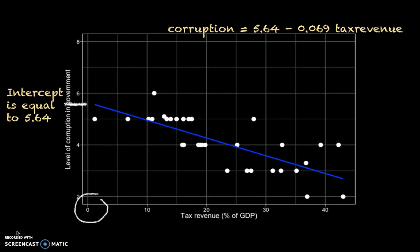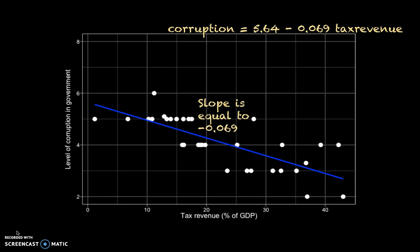The slope tells you how steep the line is. We get the negative number, minus 0.069, which suggests that it's a downward slope, which is indeed what we see with the blue line. This is the amount corruption goes down when tax revenue increases by 1. Since tax revenue is on a scale from about 0 to about 50, that is hard to read. But if we multiply it by 10, we get minus 0.69, which suggests that if tax revenue goes up by 10 — from 0 to 10, for example — then the level of corruption goes down by about 0.7. We go from approximately 5.64 down to 4.98 or something.